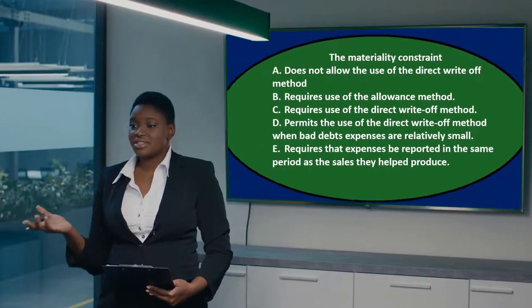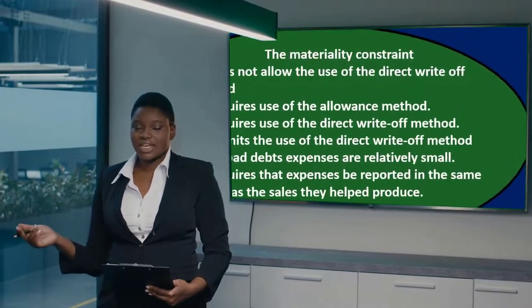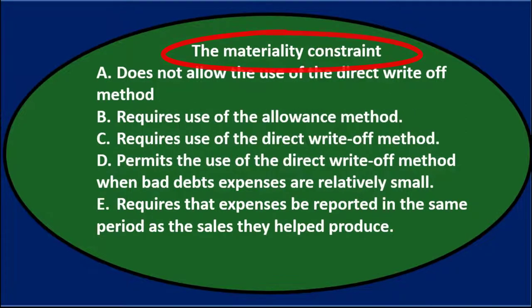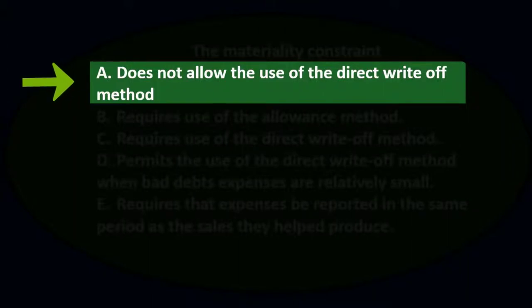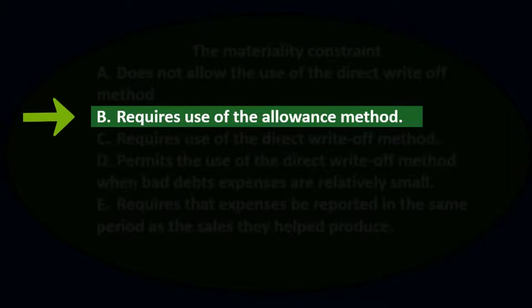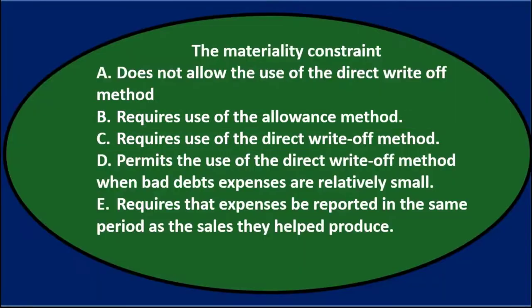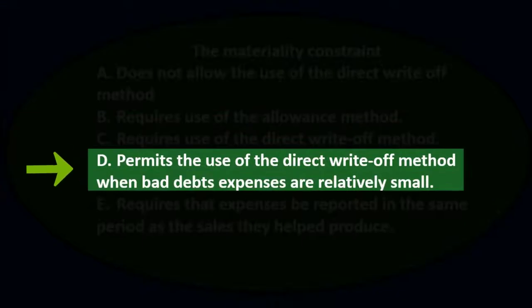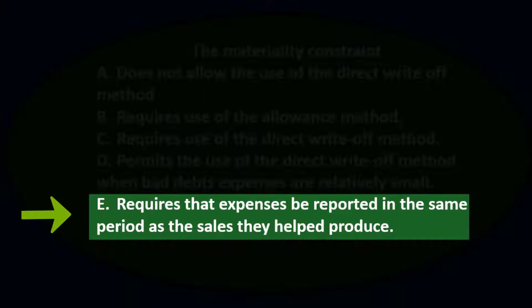In this presentation we will take a look at multiple choice questions related to receivables. First question: The materiality constraint — A, does not allow the use of the direct write-off method; B, requires the use of the allowance method; C, requires use of direct write-off method; D, permits the use of direct write-off method when bad debt expenses are relatively small; or E, requires that expenses be reported in the same period as sales they helped produce.